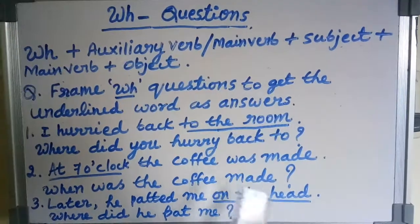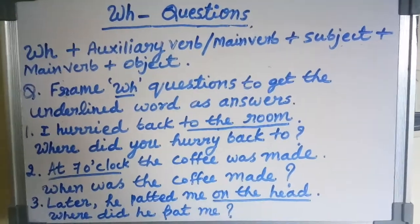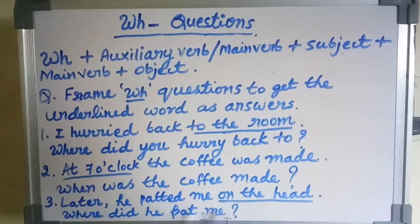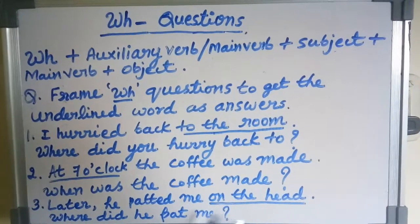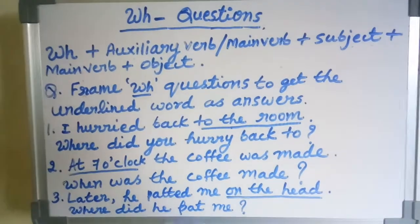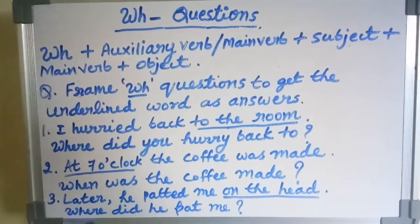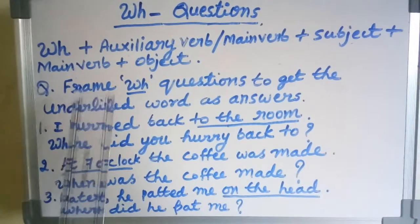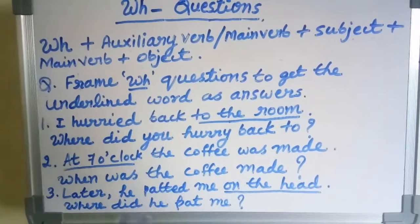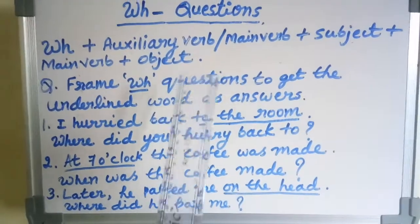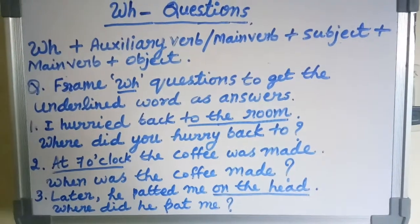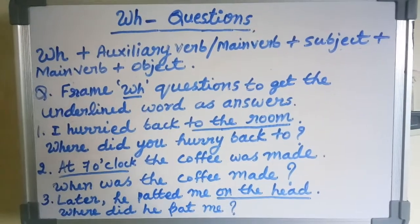Next: 'He patted me on the head.' The underlined word is 'on the head.' The answer is: 'Where did he pat me?' See the formula — WH word 'where,' then auxiliary verb 'did,' then subject 'he,' then main verb 'pat,' then the remaining part of the sentence and a question mark.